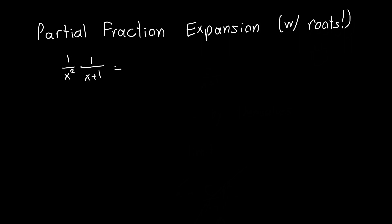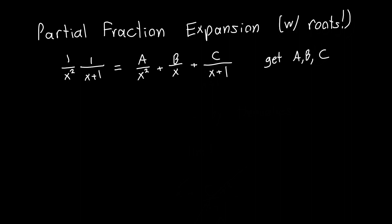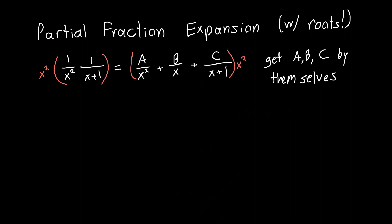So what does this equal? We know that this is equal to some coefficient A over x squared, plus some other coefficient B over x, plus a third coefficient C over x plus 1. How do we find them? In the last video we came up with this general idea of getting A, B, and C by themselves through multiplication. So if we want to get A by itself in this equation, we want to multiply everything by x squared.